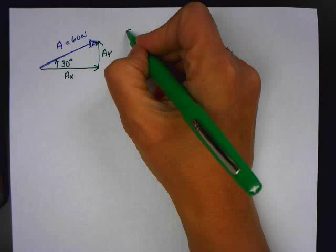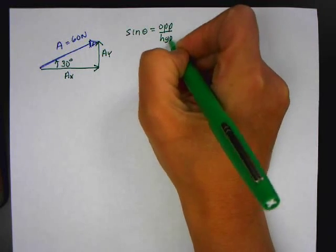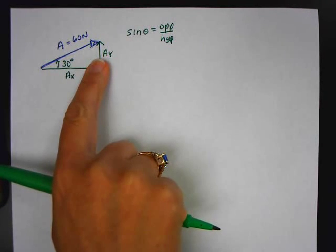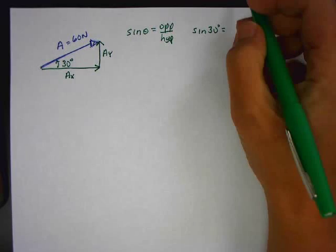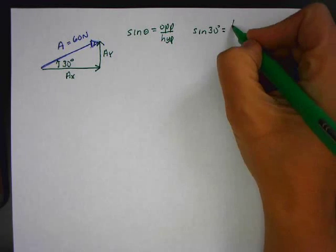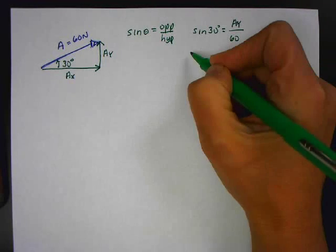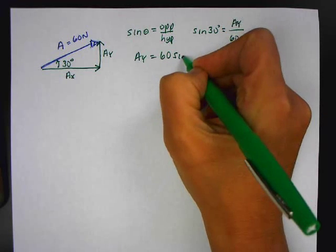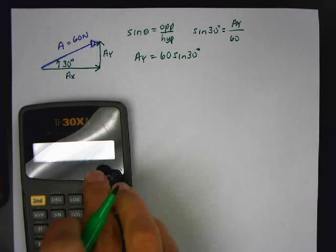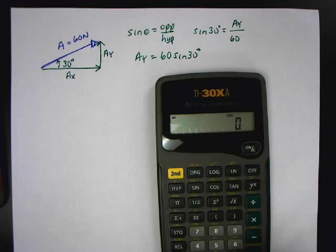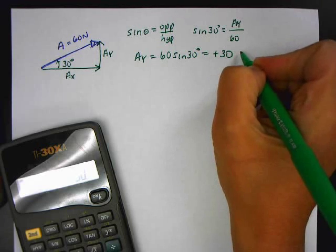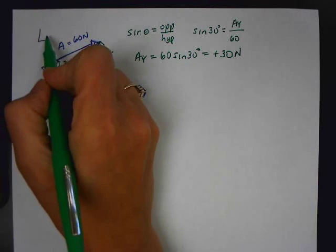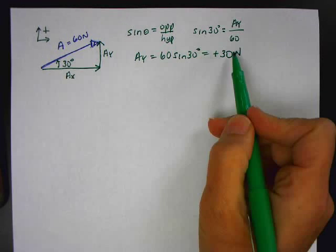Just start from the beginning: sine of theta is opposite over hypotenuse. Looking at the picture, A sub y is opposite and A sub x is adjacent. So sine of 30 equals A sub y over the hypotenuse, which is 60. Therefore A sub y equals 60 times sine of 30. On the calculator, sine of 30 is 0.5, times 60 equals 30 newtons. That's positive — remember, up and to the right is positive, and this component goes up, so it's positive 30.